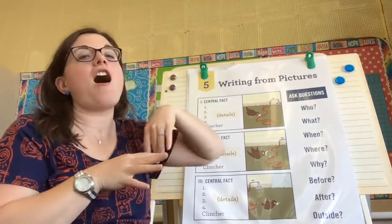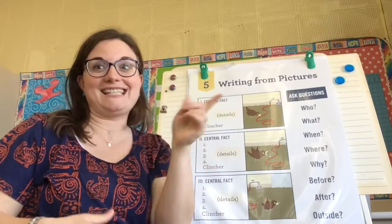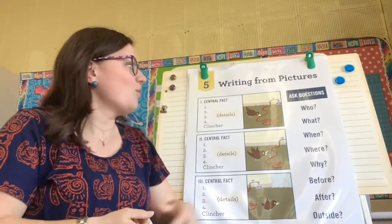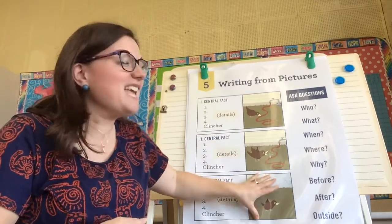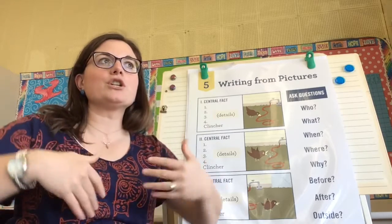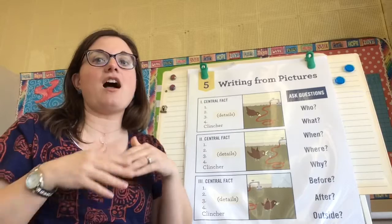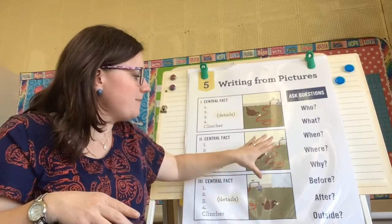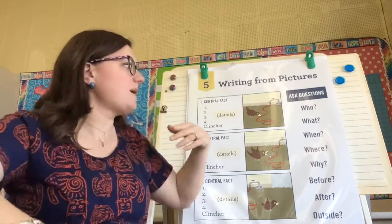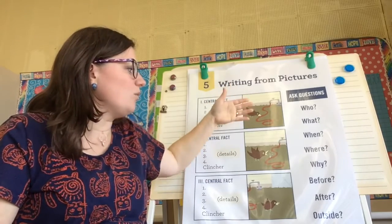We're going to move to unit five, where we write from pictures. We're not going to have a source text that we're reading anymore to get our information. We are going to have three pictures and we get to put the story together.